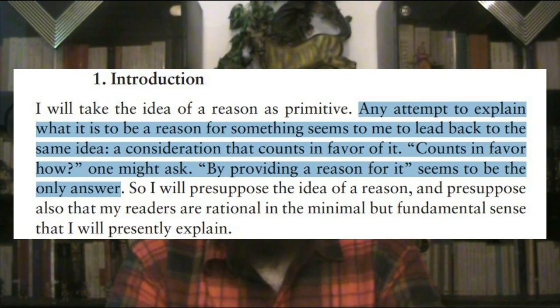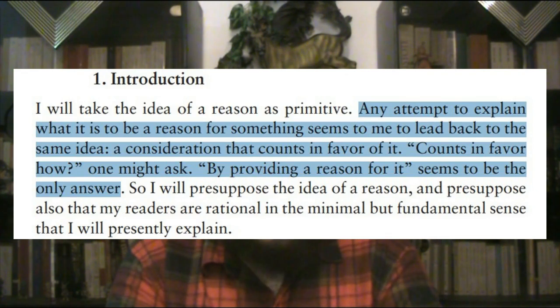Scanlon says: 'Any attempt to explain what it is to be a reason for something seems to me to lead back to the same idea — a consideration that counts in favor of it. Counts in favor how? By providing a reason for it seems to be the only answer.' So you have a reason to do X means you have a consideration that counts in favor of X, or that promotes X. For example, I can certainly give an account in favor of selling drugs to children — it would allow me to make quick money — but anyone can reasonably object to that action or to my reasons for wanting to do it.